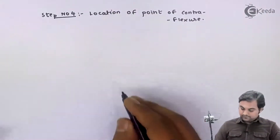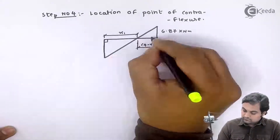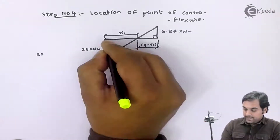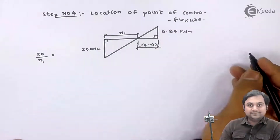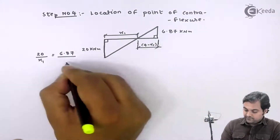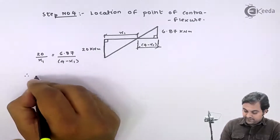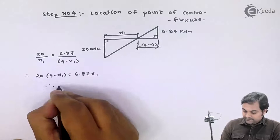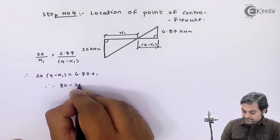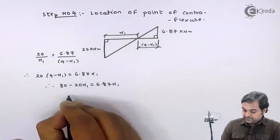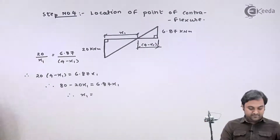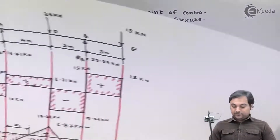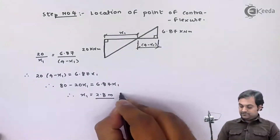From these two similar triangles, the height of the bigger triangle upon its base equals the height of the smaller triangle upon its base. Therefore: 20 × (4 − x1) = 6.87 × x1, which gives 80 − 20x1 = 6.87x1. Solving for x1, we get x1 = 2.8 meters from point A.